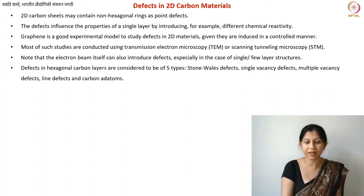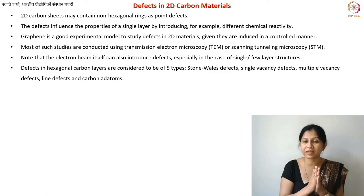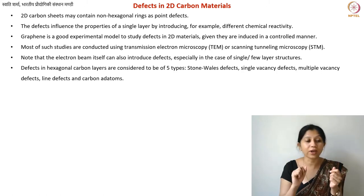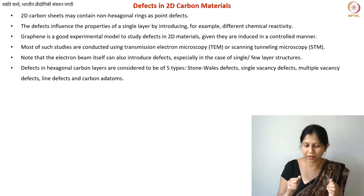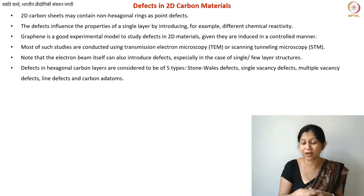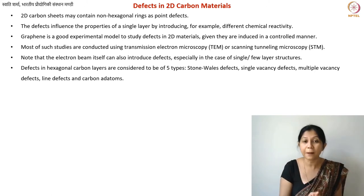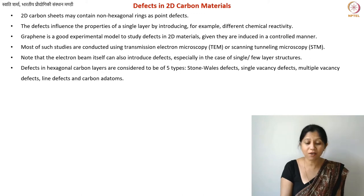These kinds of defects in hexagonal carbon sheets or graphene-like sheets are divided into five types: Stone-Wales defects, single vacancy defects, and others. In general, defects in 3D materials include point defects, line defects, and 3D defects like screw dislocations or slip planes. Those are limited to 3D materials — you're not going to have a stacking fault in graphene because it's a single layer, so there's no question of stacking. Some dislocations or defects are simply not possible in a 2D material.